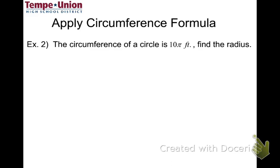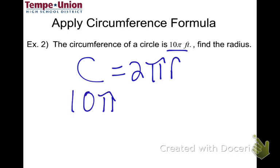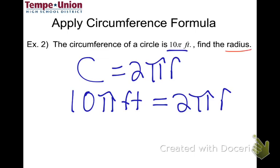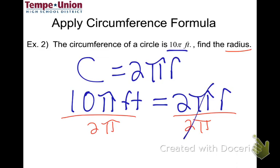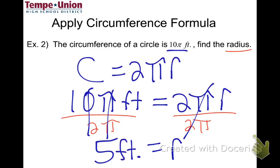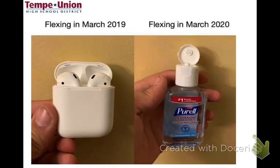Next problem: the circumference is given as 10π feet and we need to find the radius. Starting with C equals 2πr, substitute 10π equals 2πr. Divide both sides by 2π — the π's cancel and 2 goes into 10 five times — giving a radius of 5 feet. That wraps up the circumference formula. Have a great week!